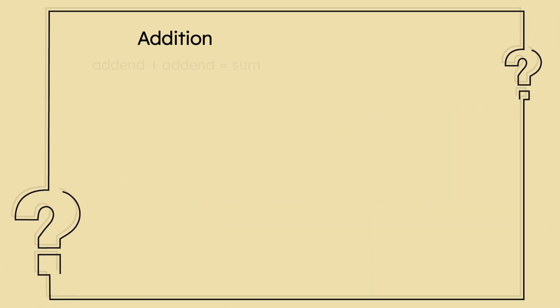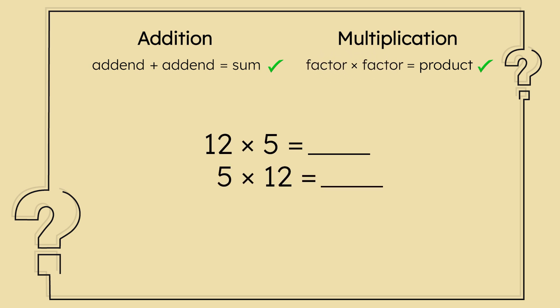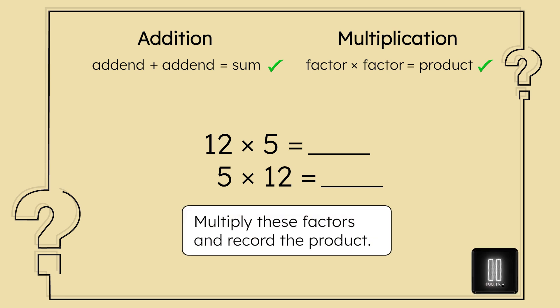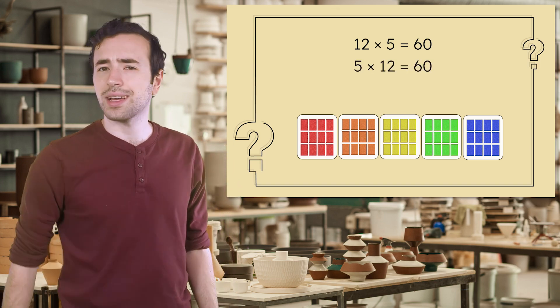With addition, we have our addends and sum. And with multiplication, we have our factors and product. When adding, we can arrange our addends in any order. Can we do the same with our factors when multiplying? Yes. Since multiplication is just repeated addition, we could count by 12 a total of 5 times, or we could count by 5 a total of 12 times. Pause here to multiply these factors and record the product in your guided notes.